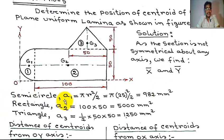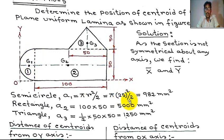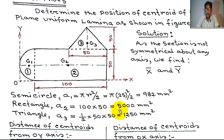Area of semicircle A1 equals pi r squared by 2. The diameter is 50 mm, so r equals 25 mm. Therefore A1 equals pi times 25 squared divided by 2, which equals 982 mm². Area of rectangle A2 equals 100 into 50, which equals 5000 mm².